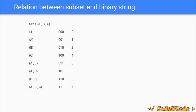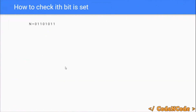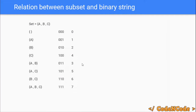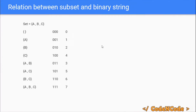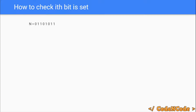For each number in the loop, if the ith bit is set then the ith element exists in the subset. For example, looking at 5: the 0th and 2nd bits are set, so this subset contains the 0th element 'a' and the element at index 2 which is 'c' — giving the subset {a, c}. To generate all subsets, run a loop from 0 to 2 raised to power n minus 1, and for each number check whether the ith bit is set. If it is set, print that element.